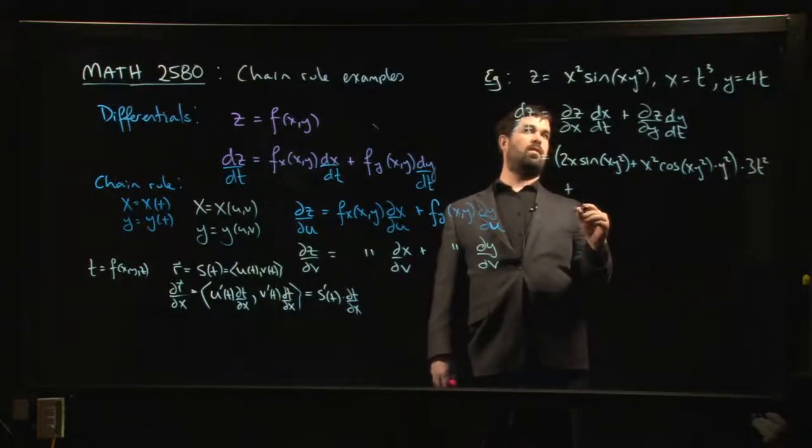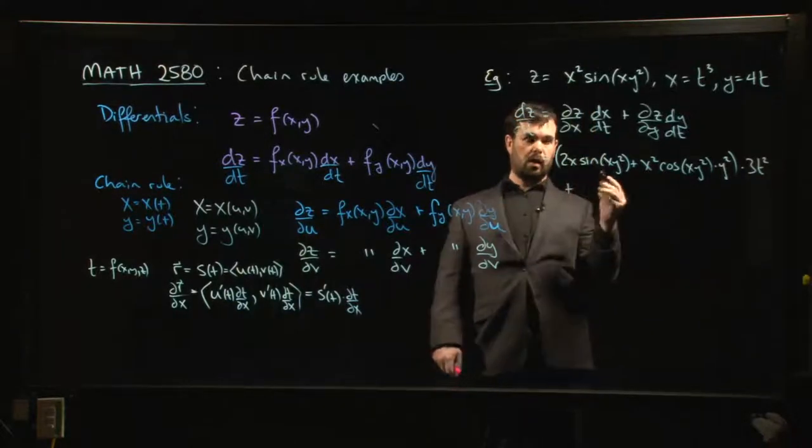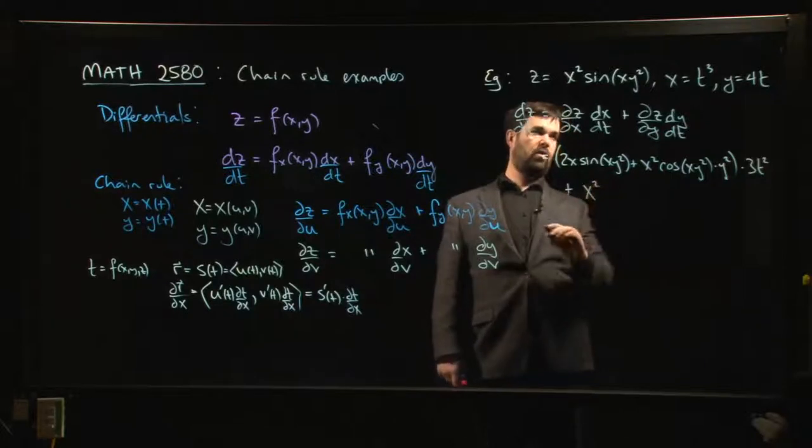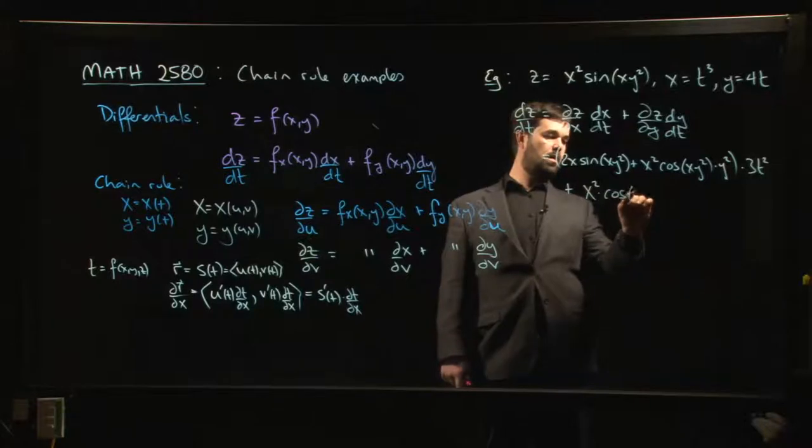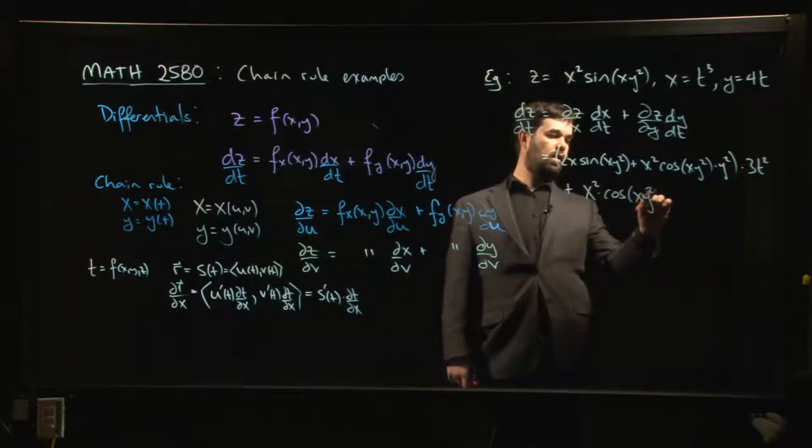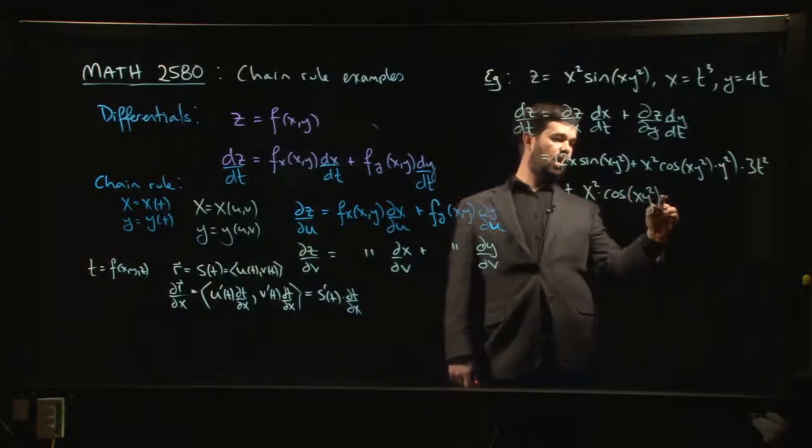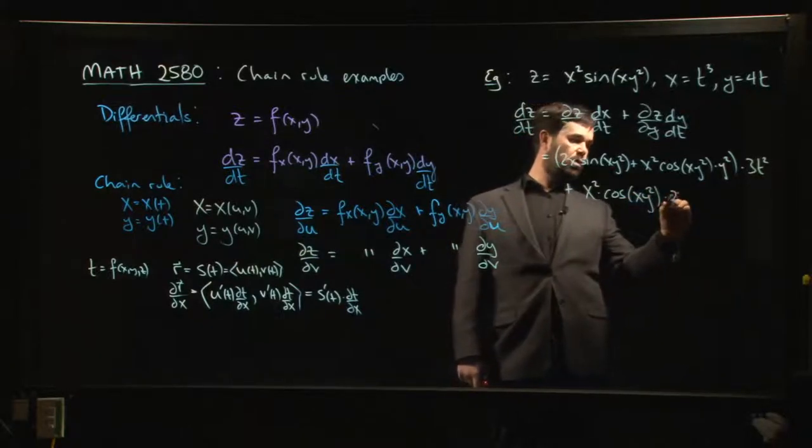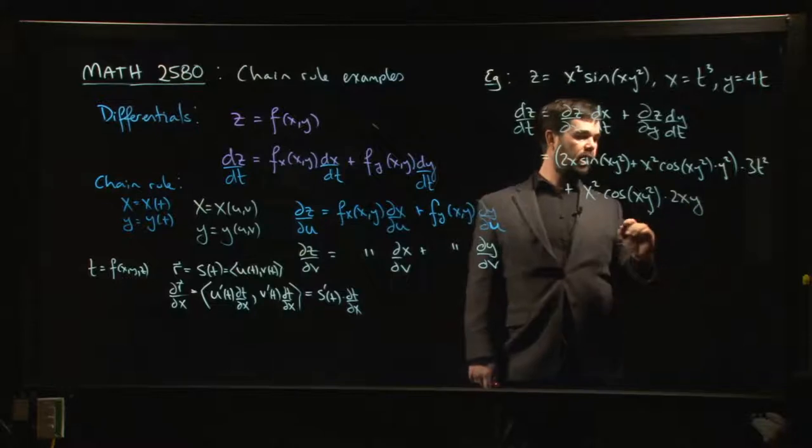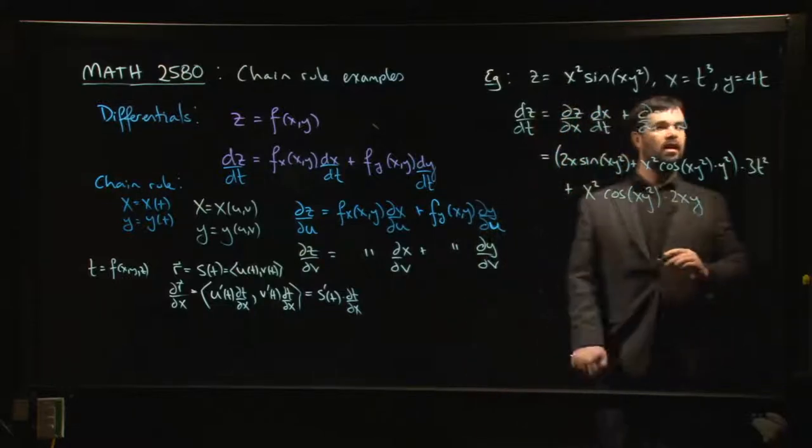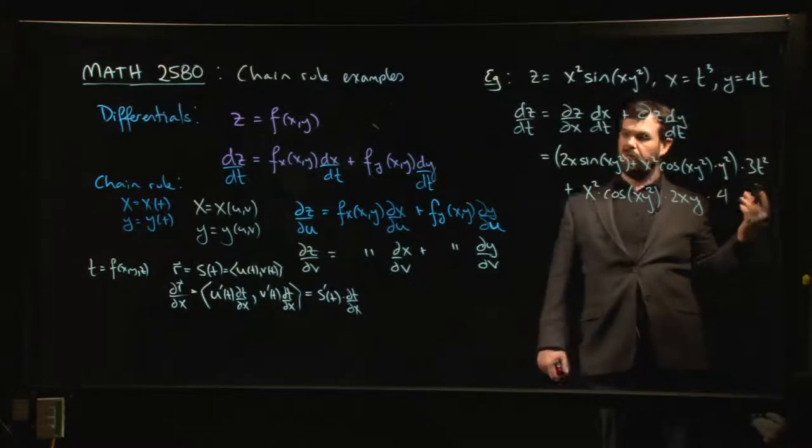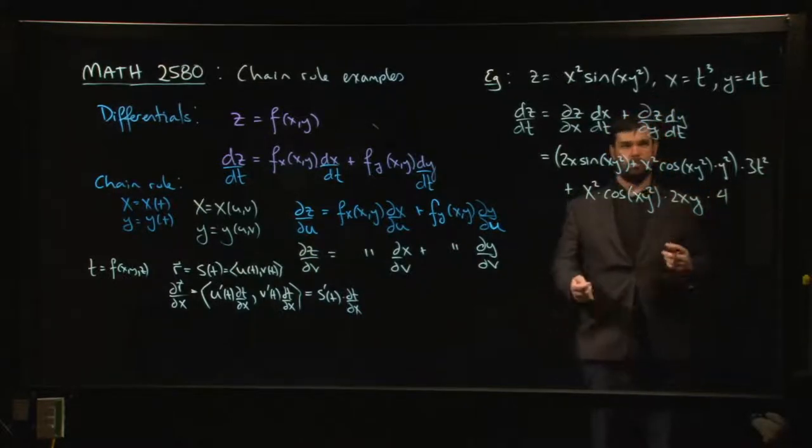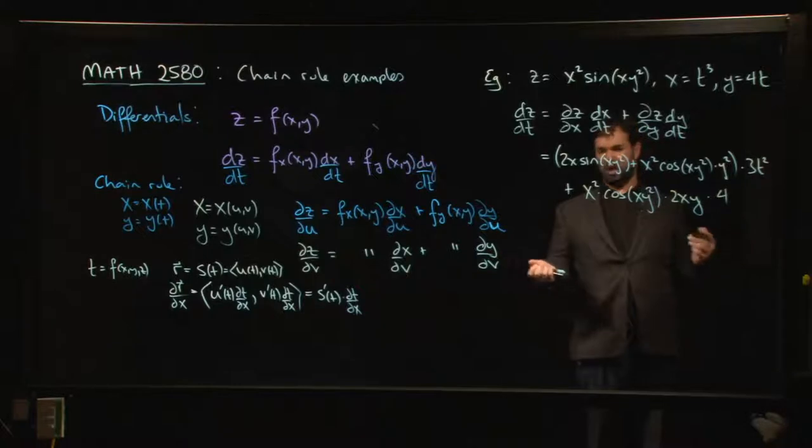And now I'm going to do dz/dy. That one's a little bit more straightforward because the x squared is a constant as far as the y derivative is concerned. So now I do the derivative of sine, I get cosine. And now we multiply by the derivative of the inside. The derivative of y squared is 2y. So I get 2xy. And finally, dy/dt, multiply by 4. And you've got it. Not so bad.